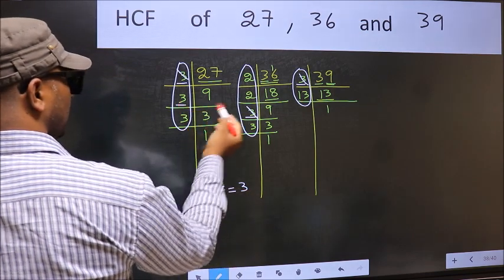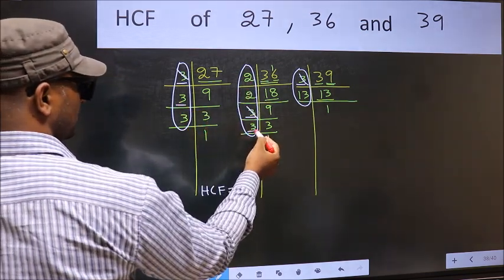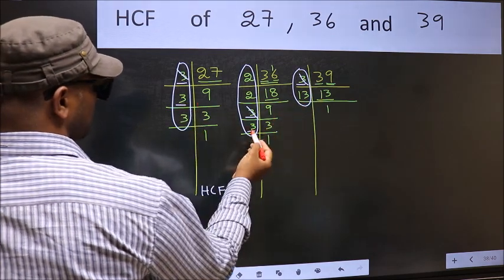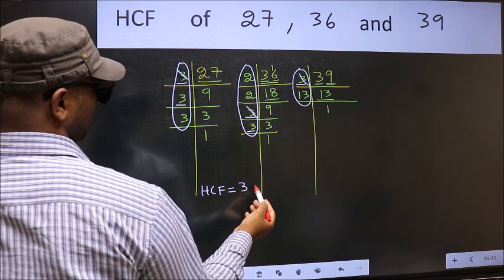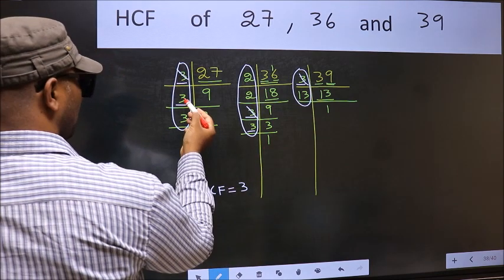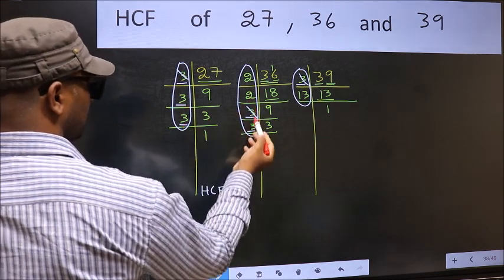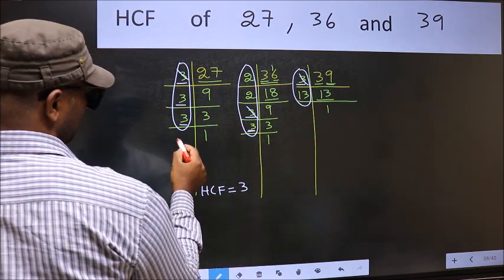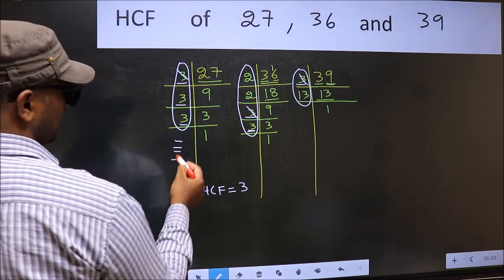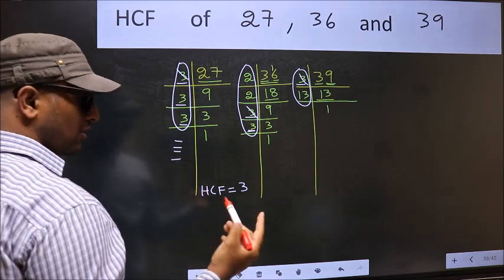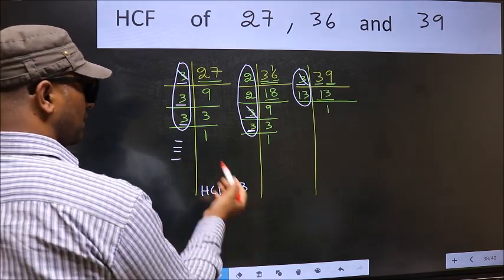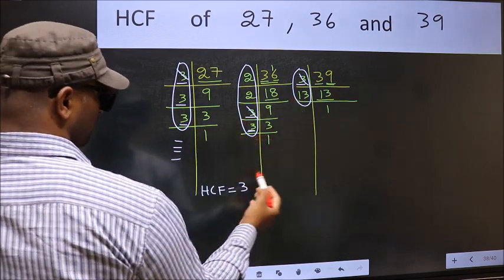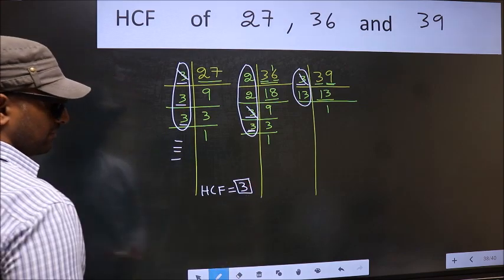Next number 3 — do we have 3 here? Yes. Do we have 3 in the next place? No. So 3 is not present in all three places, and we cannot include it. The remaining 3 is also not present in all three places. So no more numbers are left. We got only one number, 3, present in all three places. So 3 itself is our HCF.